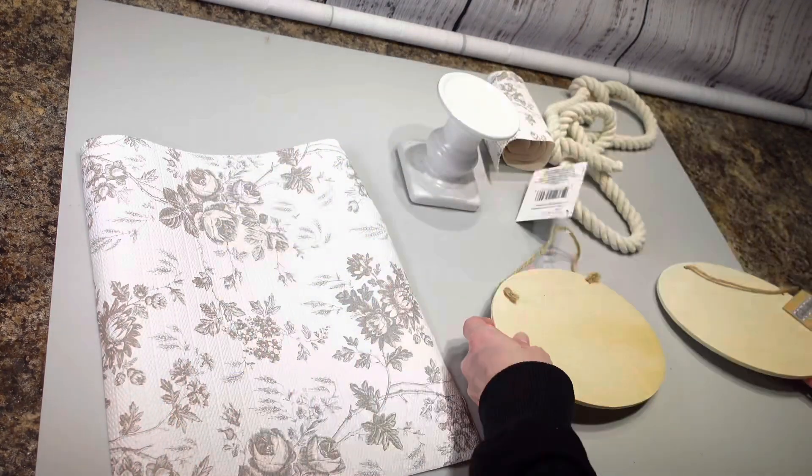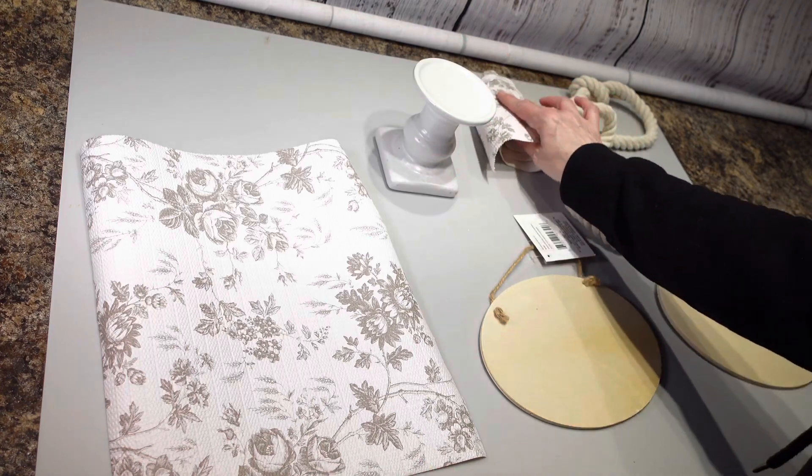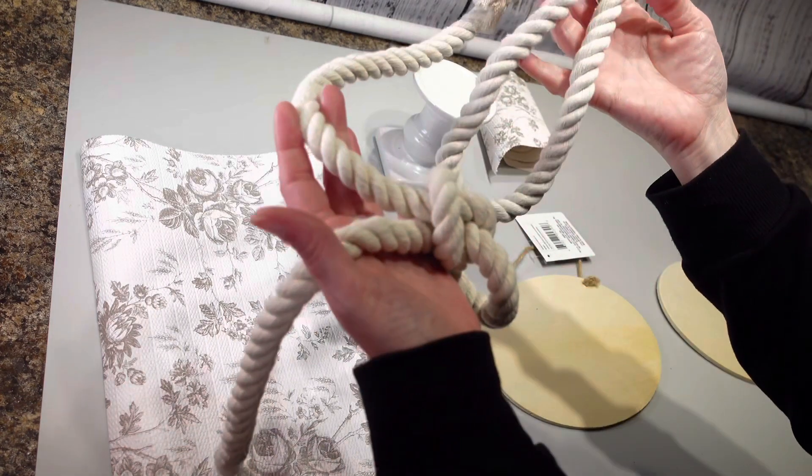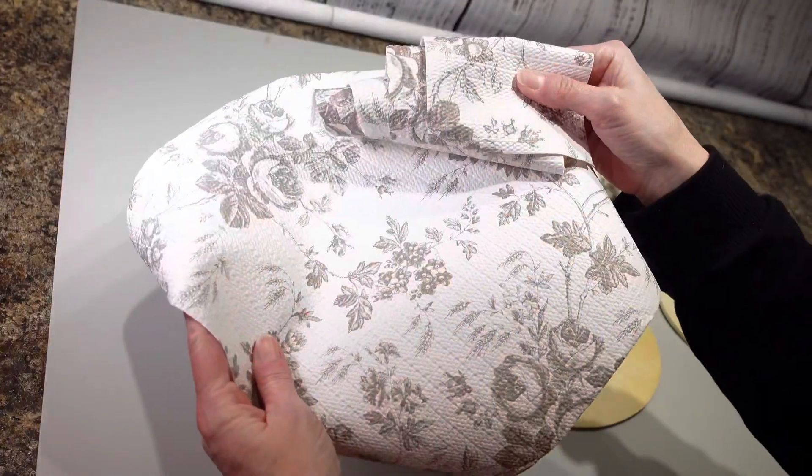I'm going to use these two wood blanks, this candle holder that I got from Dollar Tree, some of this nautical rope that I got from Dollar Tree, and this shelf lining.